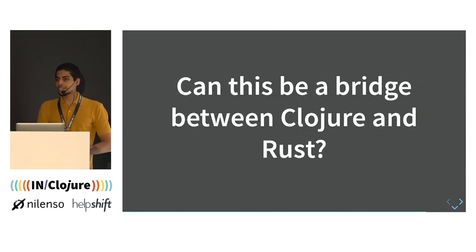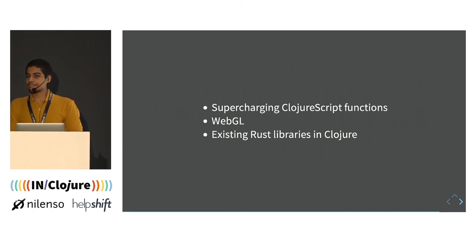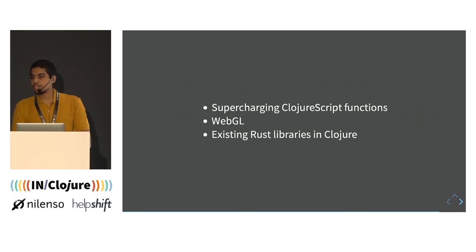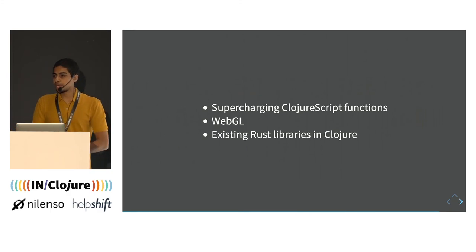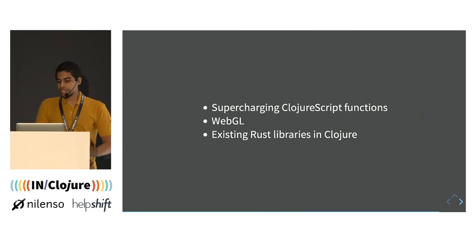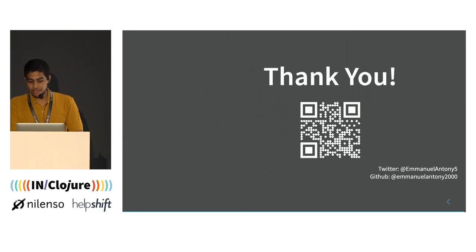Can Wasm be a bridge between Clojure and Rust? Yes — you can supercharge ClojureScript functions using Wasm, especially for graphics libraries like WebGL: Wasm can control the WebGL while ClojureScript handles the rest. There are also amazing Rust libraries you can use in Clojure through Wasm. Those are the links for further reading. That's my talk — thank you so much for listening.